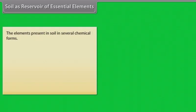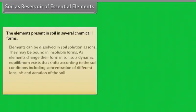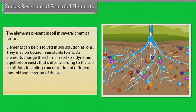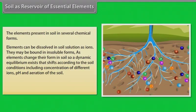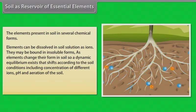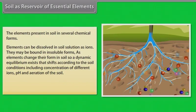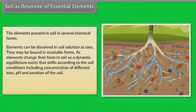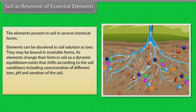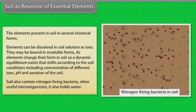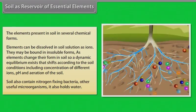Soil as a reservoir of essential elements: the elements present in soil exist in several chemical forms. Elements can be dissolved in soil solution as ions, or they may be bound in insoluble forms. As elements change their form in soil, a dynamic equilibrium exists that shifts according to soil conditions, including concentration of different ions, pH and aeration of the soil. Soil also contains nitrogen-fixing bacteria and other useful microorganisms, and it holds water.